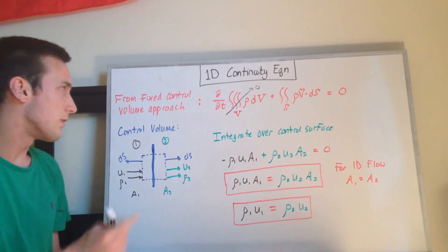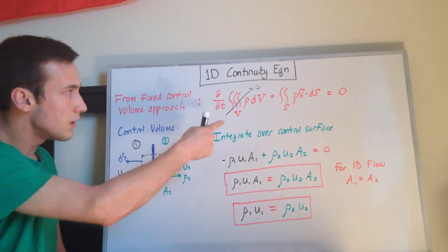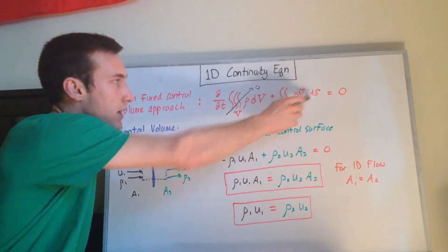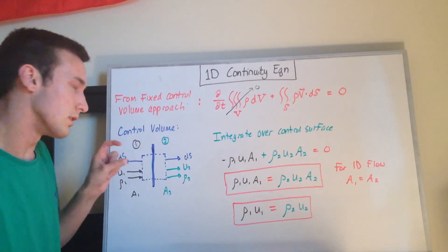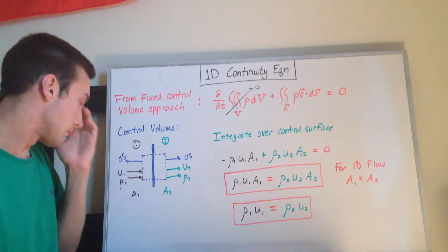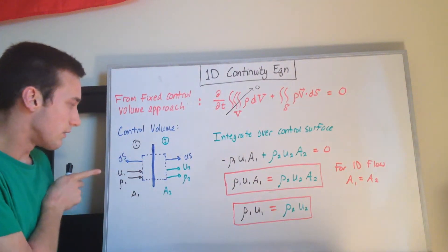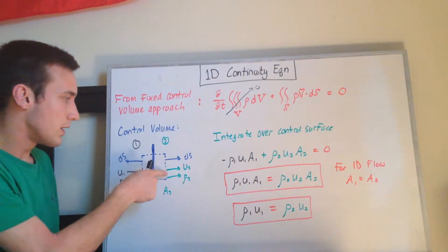So we have the density in this term, we have the velocity in this term, and we have this ds, the differential surface area. So on the left side of the control volume, we have flow going in, and on the right side we have flow going out.